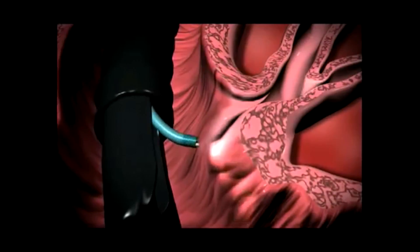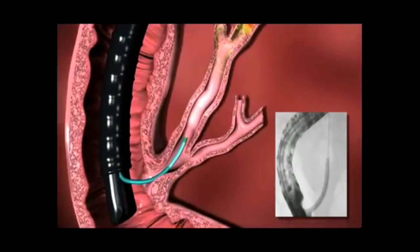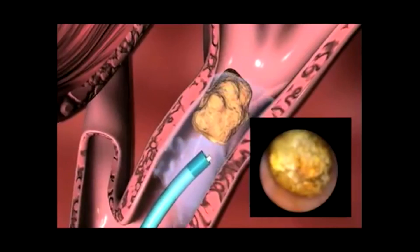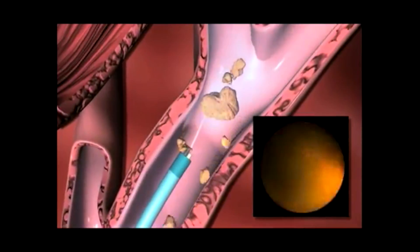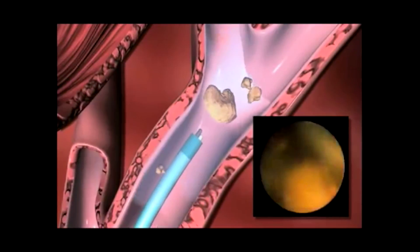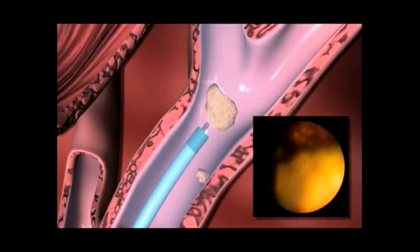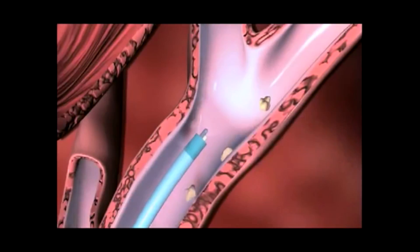In such cases, we use what is called spyglass cholangioscopy. We pass a thin endoscope within the main endoscope, and that inner endoscope can get deep into the bile duct. We can go close to the stone and pulverize it using a laser lithotripsy probe.